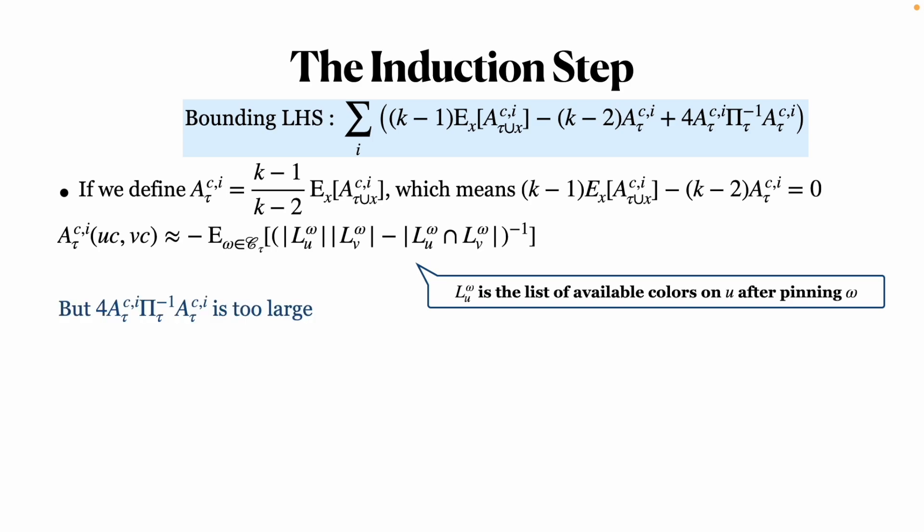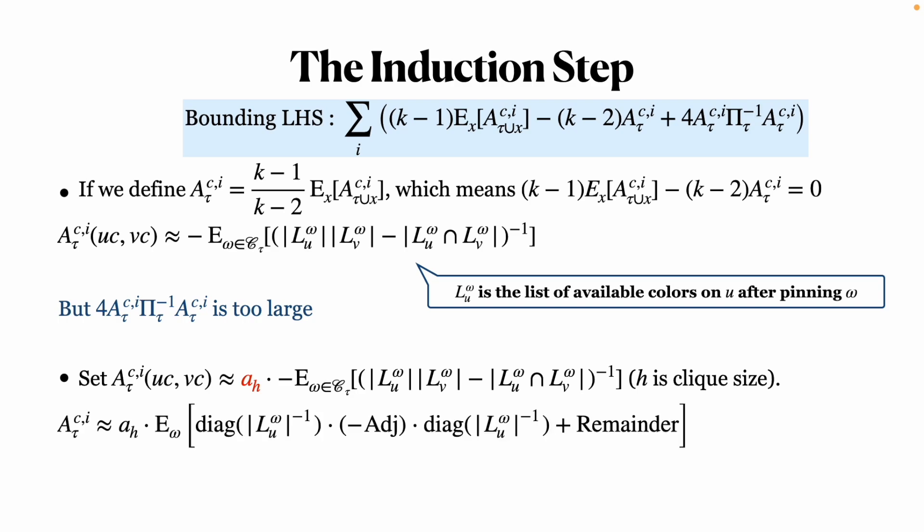However, this leads to a large quadratic term. To address this, we introduce a coefficient αH in A, where H is the clique size of the pinning τ. And we roughly write A in terms of αH, the number of available colors of one vertex |LU(ω)|, and the adjacency matrix of the clique I.